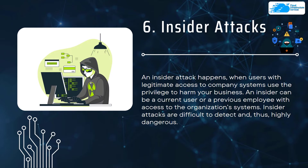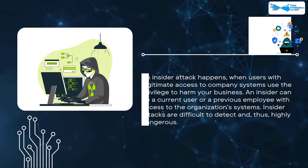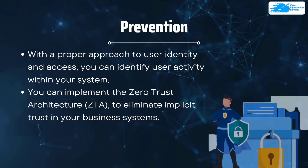Number six is an insider attack, which happens when users with legitimate access to your company's system use that privilege to harm your business. An insider can be a current or previous employee with access to the organization's systems. Insider attacks are difficult to detect and thus highly dangerous. The best prevention is through identity and access management, which lets you identify user activity and track logs.